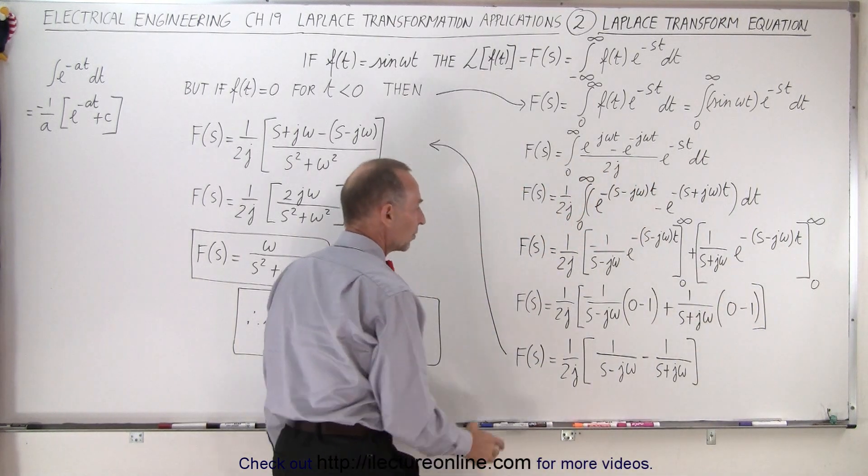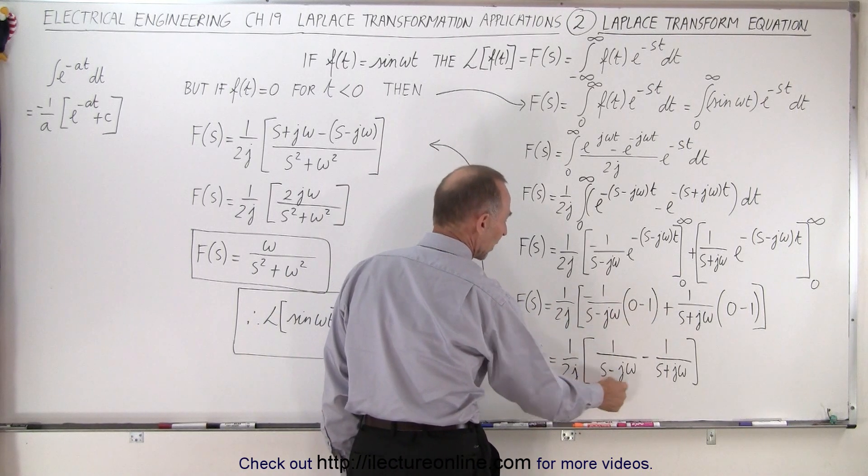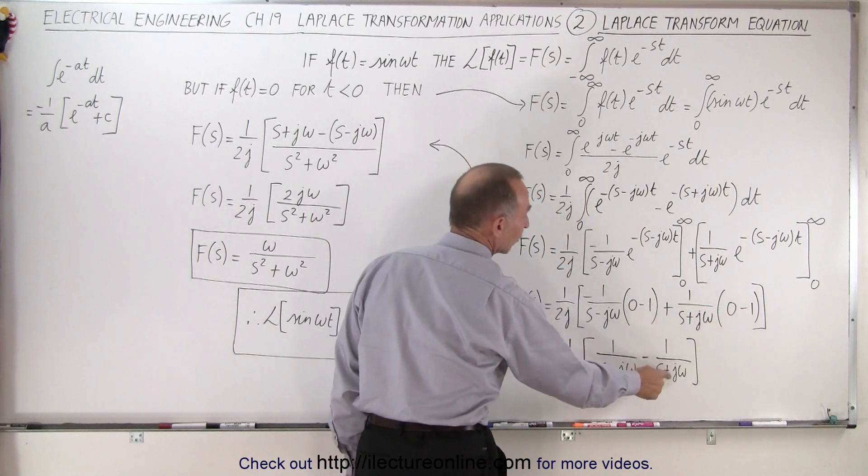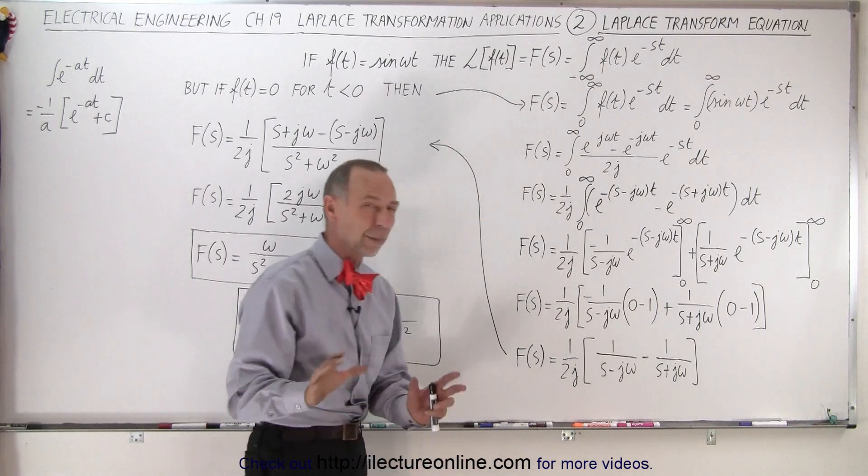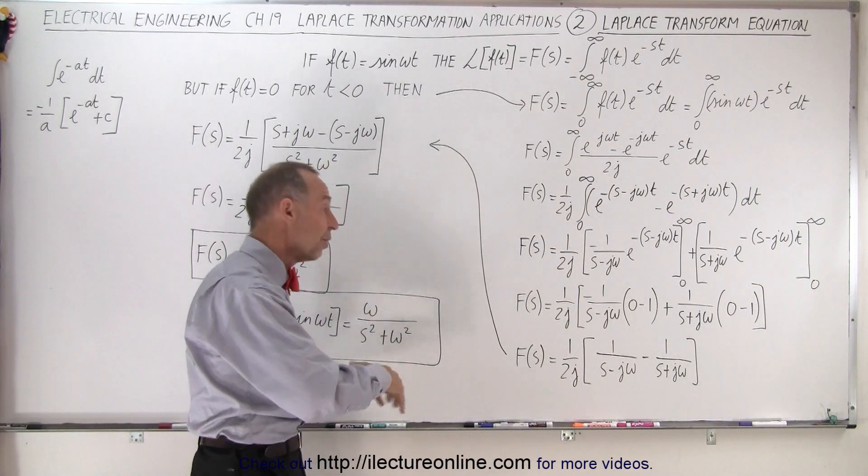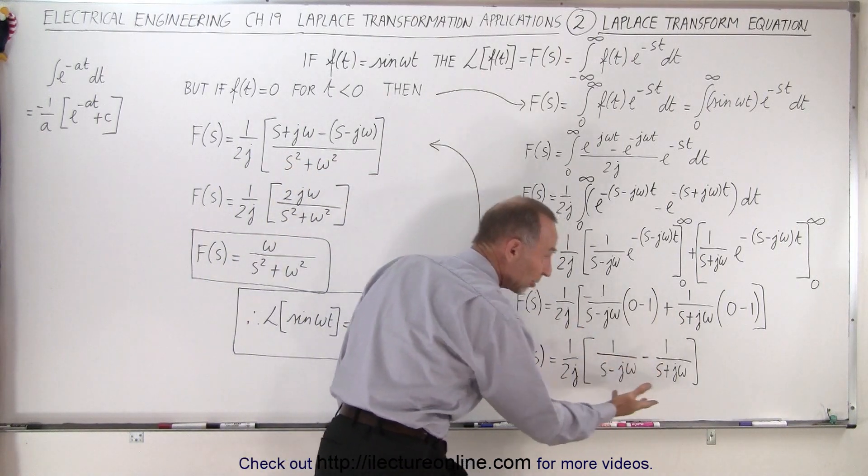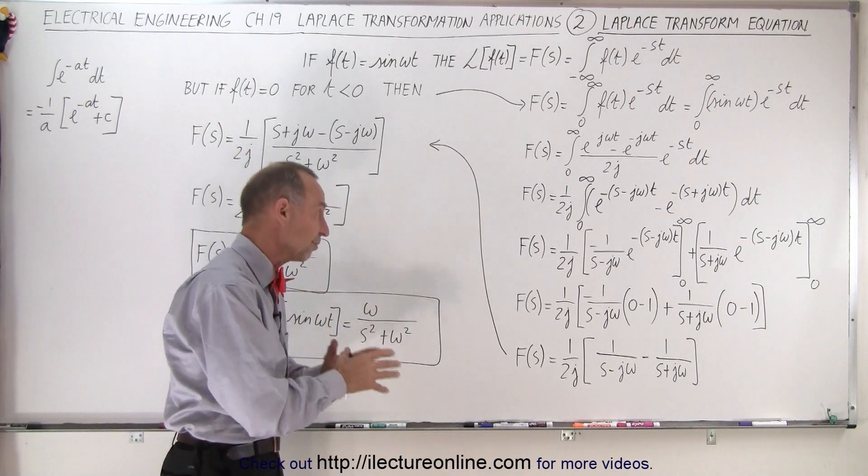So then we realize that when we work this out this minus will cancel out that minus, we get 1 over s minus j omega minus from this minus right here 1 over s plus j omega, all multiplied times 1 over 2j. Now remember what we said in the previous video, once we convert it into the frequency domain or into s domain it simply becomes an algebraic exercise once we've transformed it.